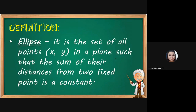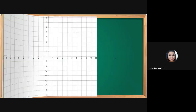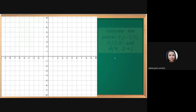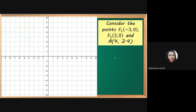To start with, we have the definition. According to your module, the writer gave this definition: an ellipse is the set of all points (x, y) in a plane such that the sum of their distances from two fixed points is a constant.